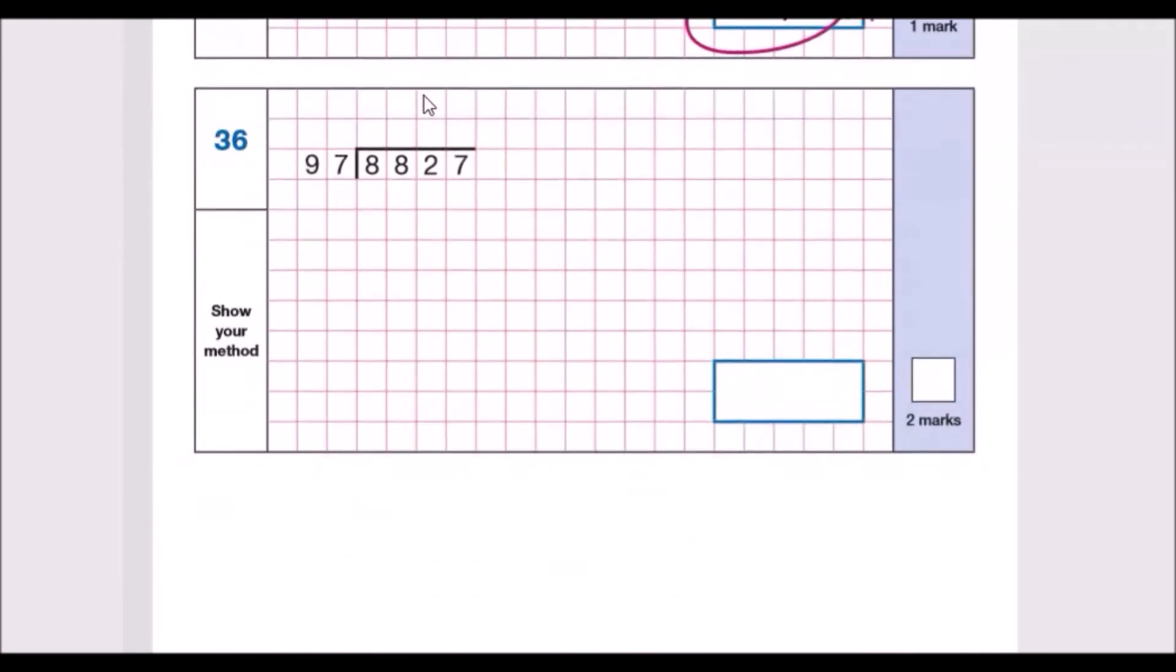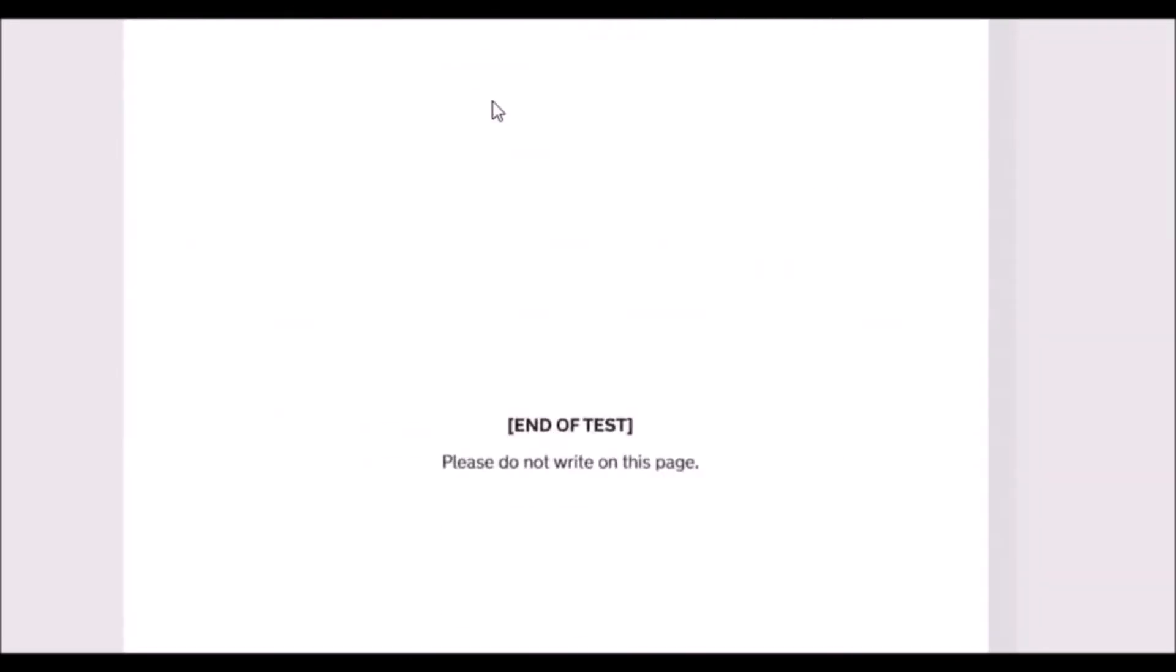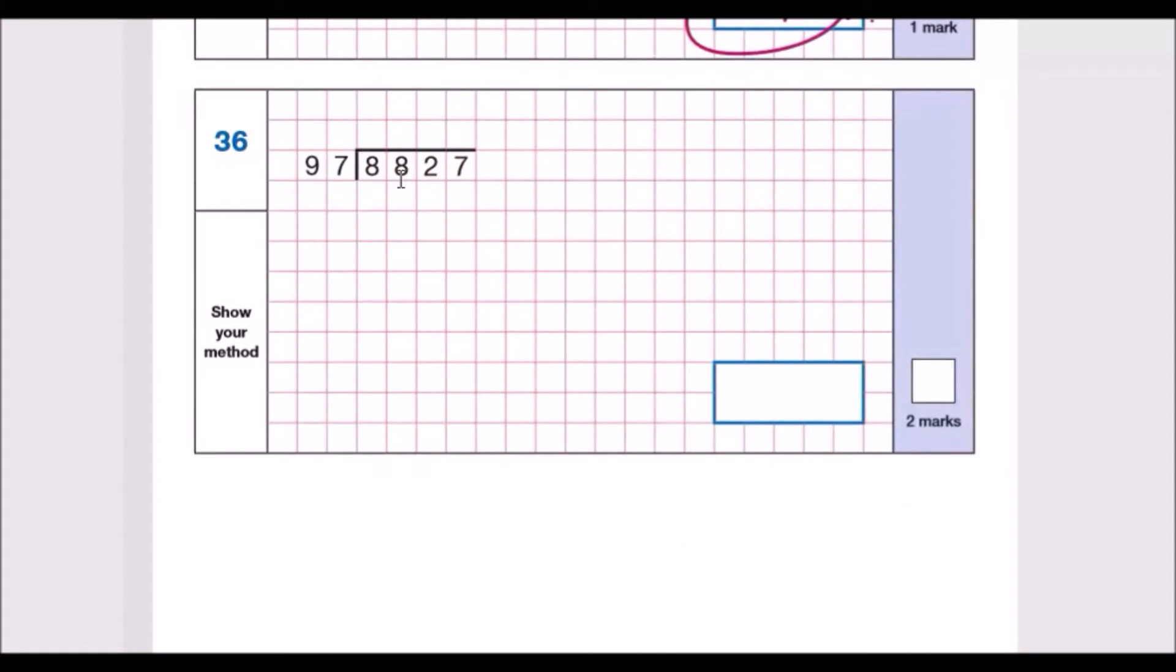Here comes the finale: number 36. 97 into 8827. You can put your 97 times tables - the way I look at it, you're adding 100 minus 3, so 100 minus 3 gives you 1, 97 minus 3 is 194, then 100 minus 3 is 291. This is just our times table - first, second, third.